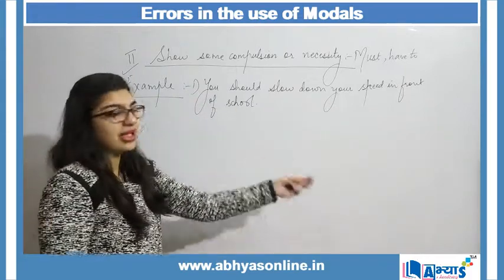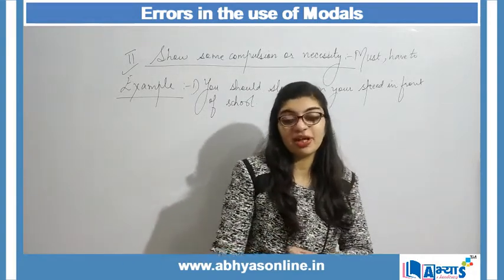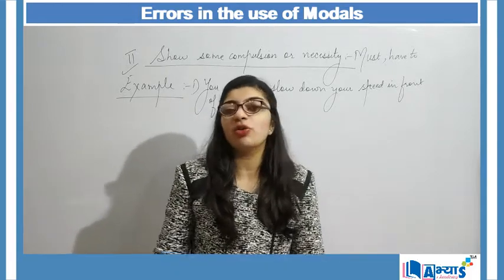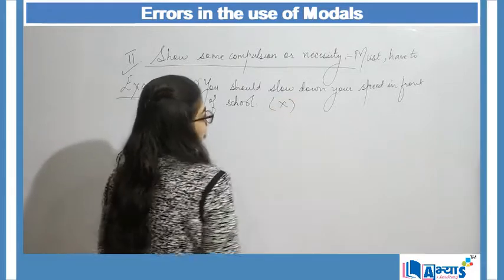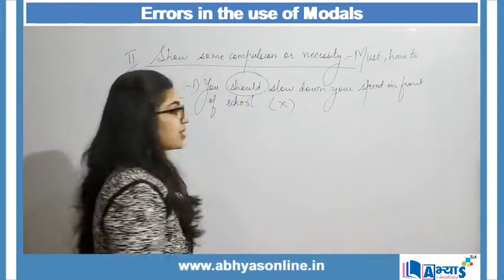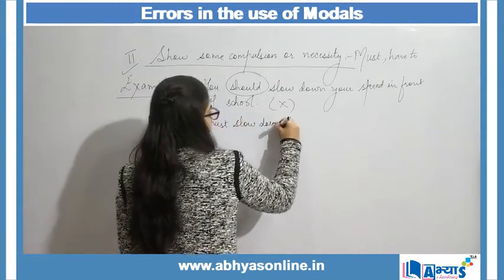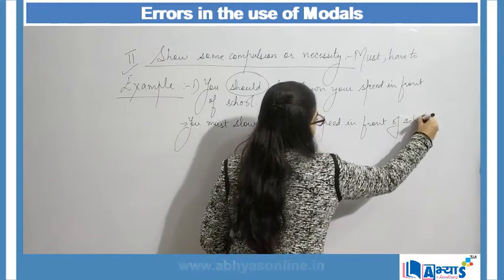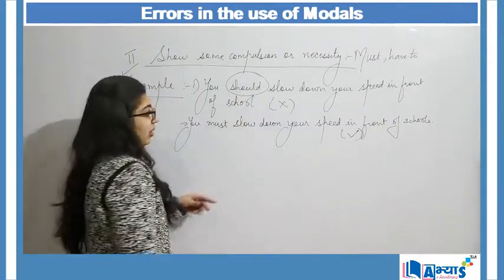For example: 'You should slow down your speed in front of school.' This shows some kind of compulsion — there is a necessity to slow down near a school because a child could cross the road at any time. So this sentence is wrong. Whenever compulsion is shown, instead of 'should' we must write 'must'. The correct sentence is: 'You must slow down your speed in front of school.'